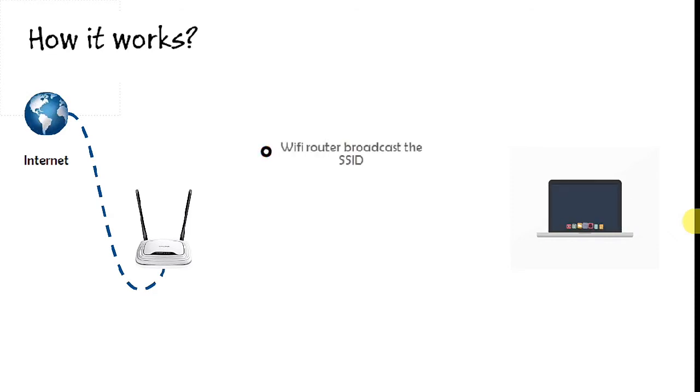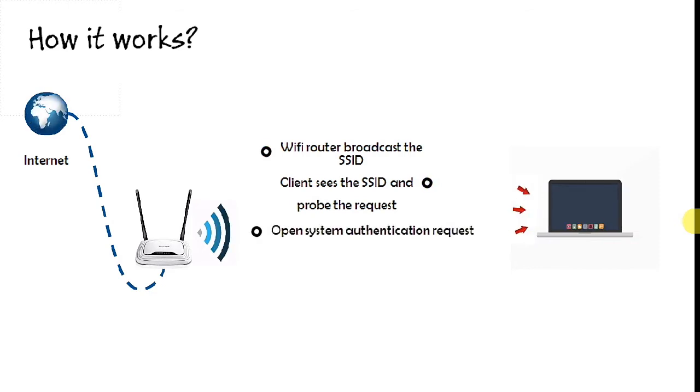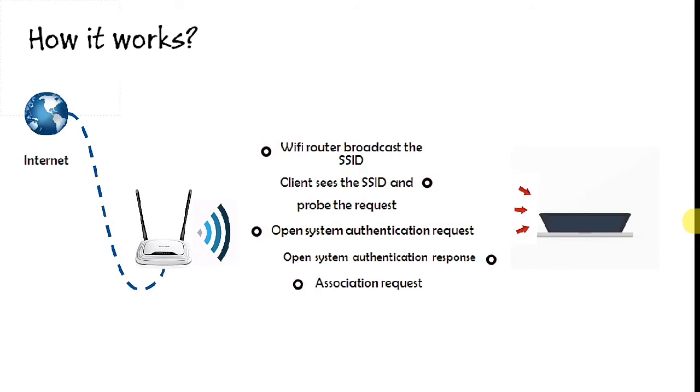Wireless router continuously broadcasts the SSID and Wi-Fi signal. Client sees the Wi-Fi signal and the SSID and sends the request. The router sends an open system authentication request, and in response the client sends an open system authentication response. The association request is granted by the Wi-Fi receiver and the association response is sent by the client.